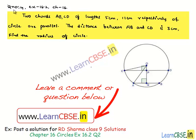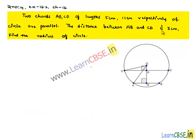Let us discuss question number 4 from exercise 16.2, chapter 16. Two chords AB and CD of lengths 5 cm and 11 cm respectively of a circle are parallel. The distance between AB and CD is 3 cm. Find the radius of the circle.